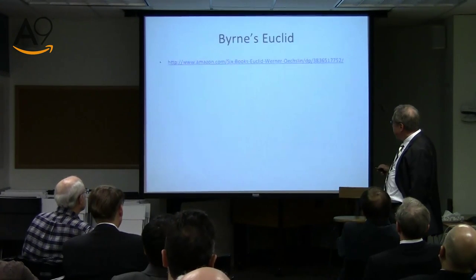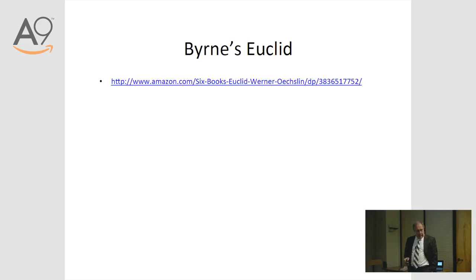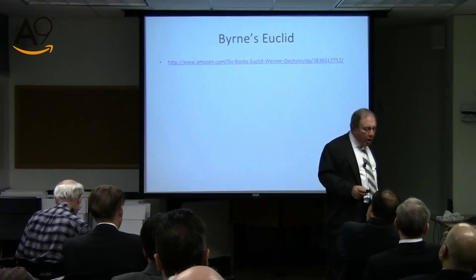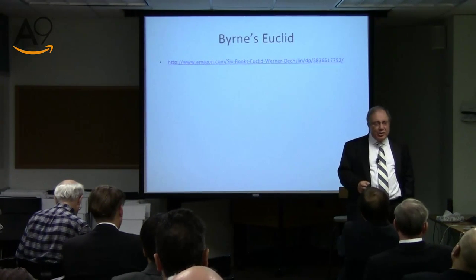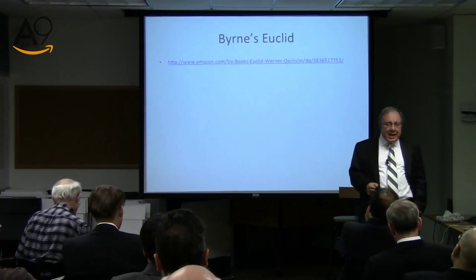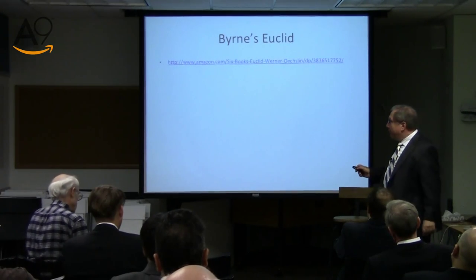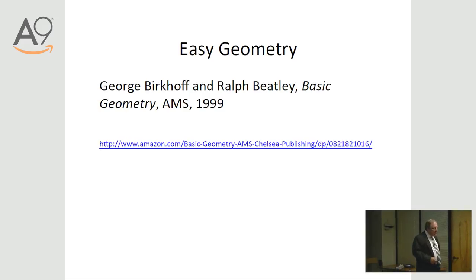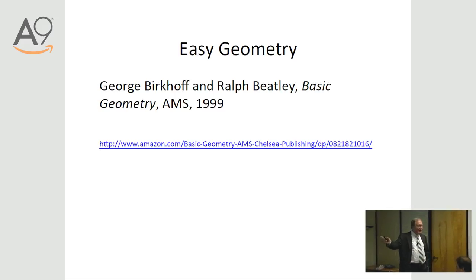If you find difficulty with standard Euclid, there is a 19th-century edition by Oliver Byrne which uses visual diagrams instead of formal proofs, making it much more accessible for many people. It was not in print for 150 years but two years ago Taschen, the German publisher, reprinted it in a very beautiful way and it sells for about 39 dollars. If neither works, there is also Basic Geometry by Birkhoff and Beatley — it's not Euclid, but it's a fallback position I'd rather you use than nothing at all.